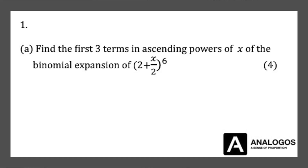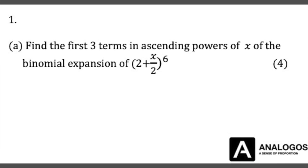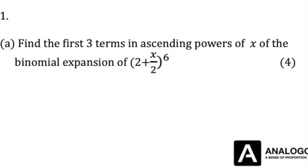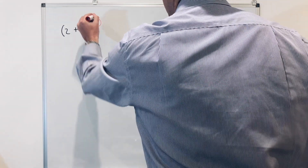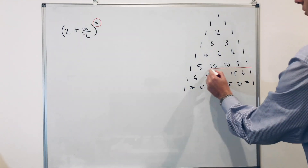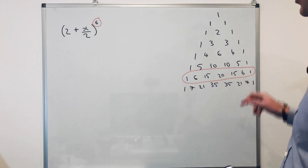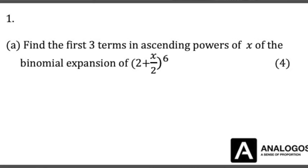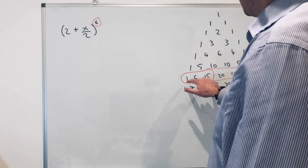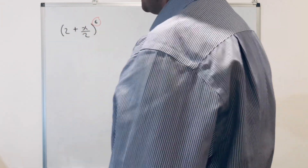Find the first 3 terms in ascending powers of x of the binomial expansion of 2 plus x over 2, all to the power of 6. Since it's to the power of 6, we're going to use the 6th row. That gives us 1, 6, 15, 20, 15, 6, 1. But the question just says the first 3 terms, so we're just going to use 1, 6, and 15.